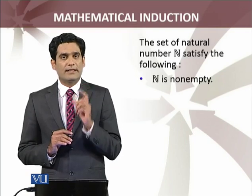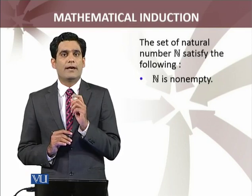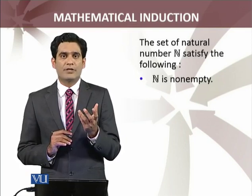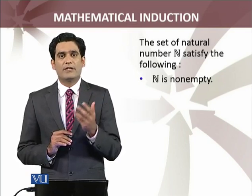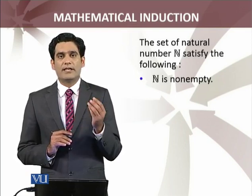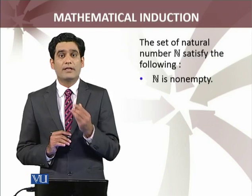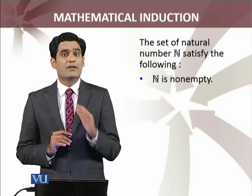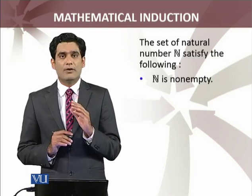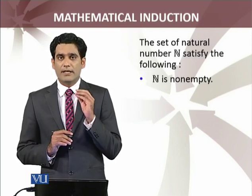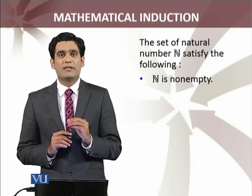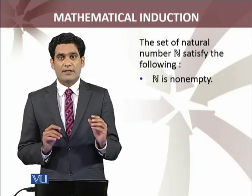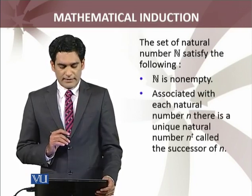The Peano axioms are about the set of natural numbers. The first axiom says the set of natural numbers is non-empty. Of course it is non-empty because it contains 1, 2, 3, and so on. Indeed, we have also shown previously that the set of natural numbers is an infinite set — it is not a finite set.